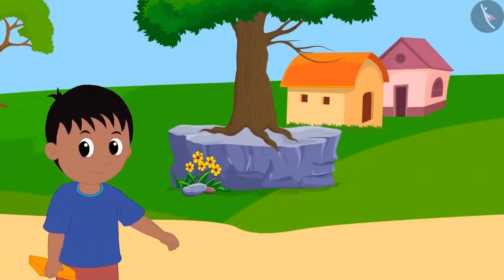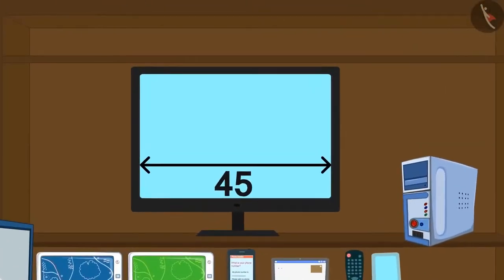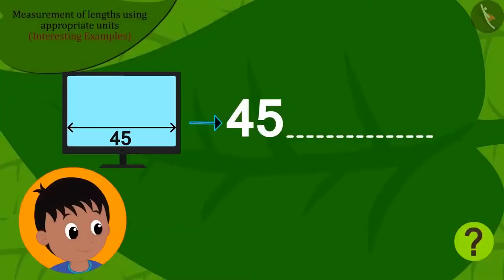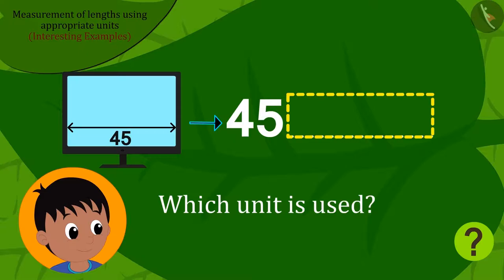When Raju was returning home, in a shop on the way, he saw a computer monitor like this. On the monitor, the screen size was written in this way, but only the number 45 was written below that. Raju came to know that the length of the screen of the monitor was 45, but Raju did not understand which unit was used for it.